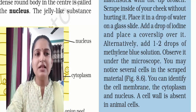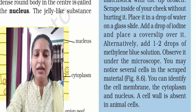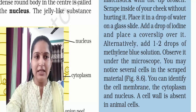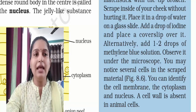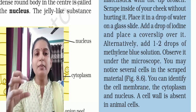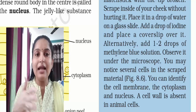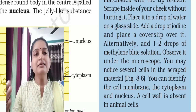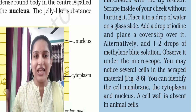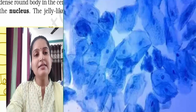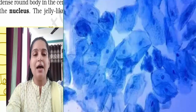Add a drop of iodine solution and place a cover slip over it to stabilize. In the scraped material there will be many cells. You can identify the cell membrane, the cytoplasm, and the nucleus. A cell wall is absent in animal cells.